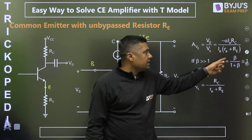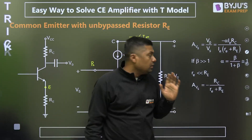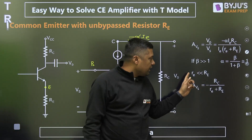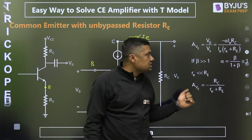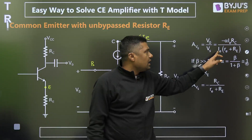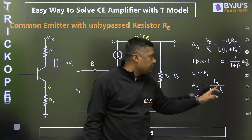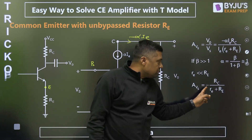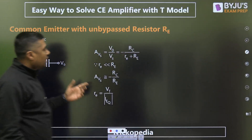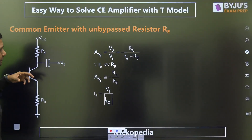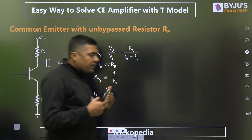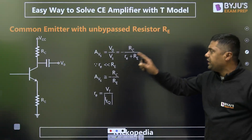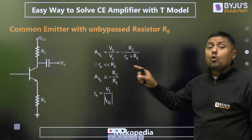Now, alpha is very nearly equal to 1, given by beta upon (1 + beta). If beta is very large, alpha ≈ 1 and small re is negligible compared to RE. Cancel IE, IE; alpha ≈ 1; RC upon (re + RE) — and since re is negligible, the approximate gain becomes minus RC by RE. This gain is independent of any transistor parameter, making it highly stable, but it is very low, with a 180-degree phase shift. It also gives overestimated results.